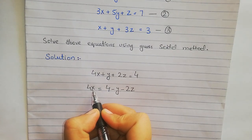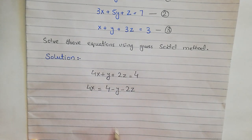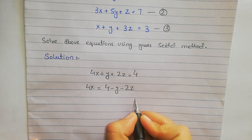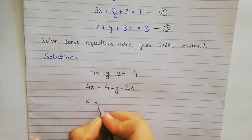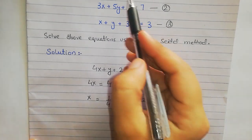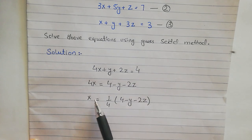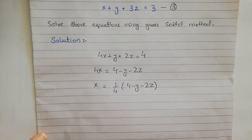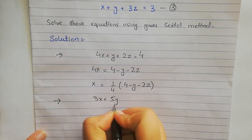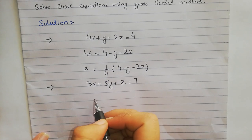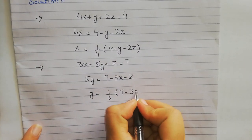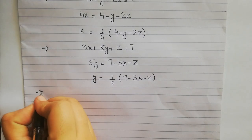We need the values of X, Y, and Z as simple variables. We take the coefficients to the other side — since 4 is multiplying X, it will divide on the other side. So the equation becomes: x = (1/4)(4 − y − 2z). This is the X equation derived from the first equation. Similarly, we derive equations for Y from the second equation and Z from the third equation.